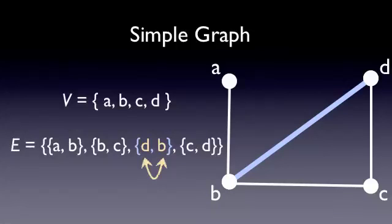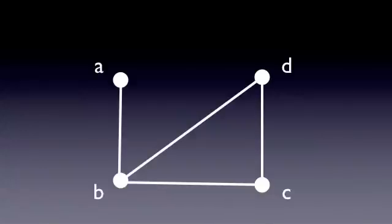Let's take a look at our original graph and add another edge. Notice that we now have two different edges that are both connected to vertices A and B. This is called a multigraph.